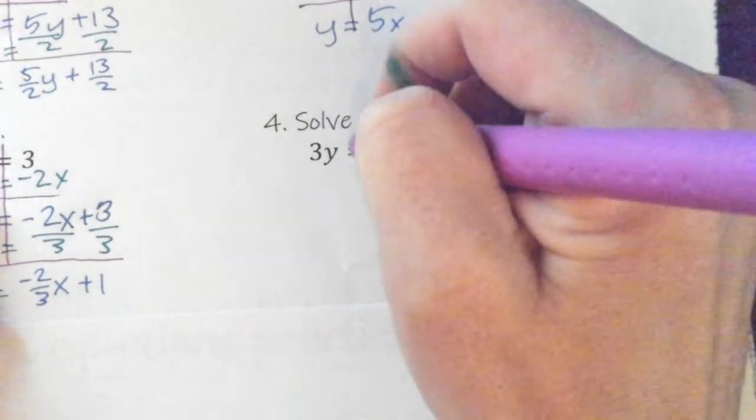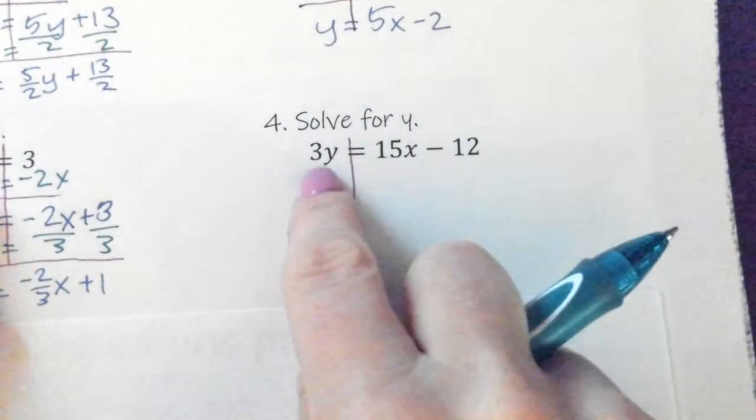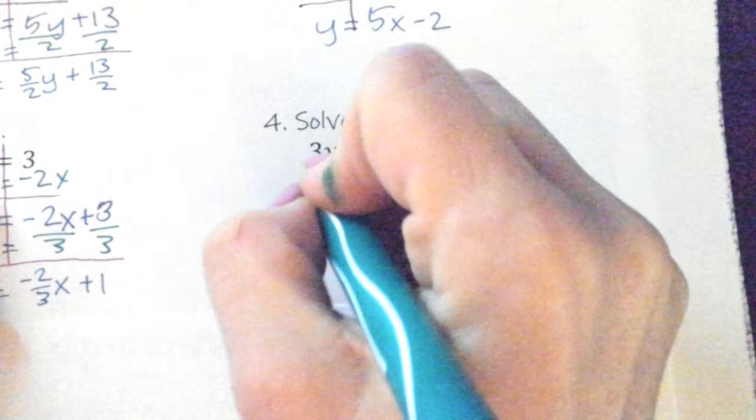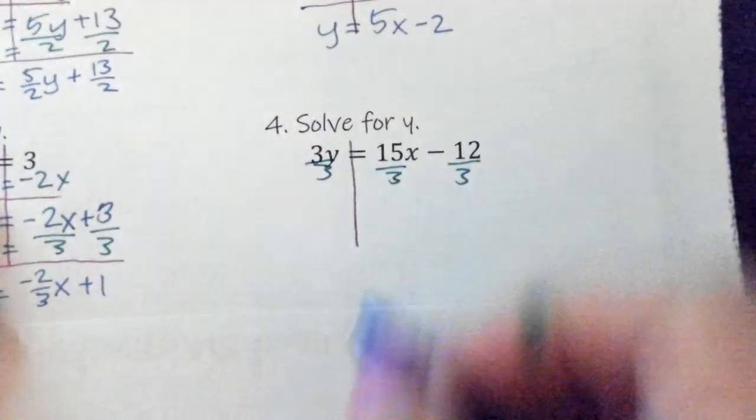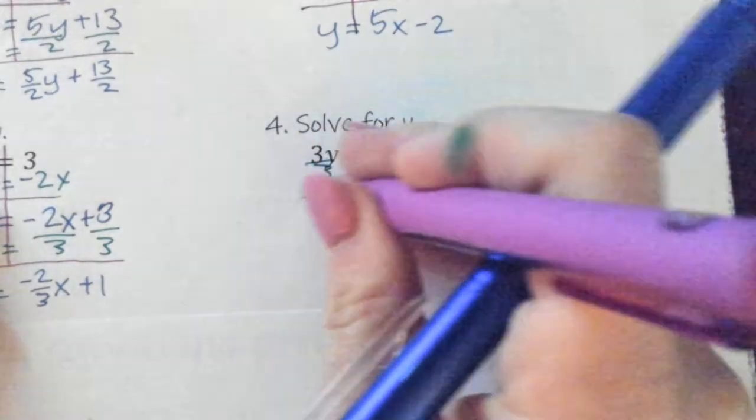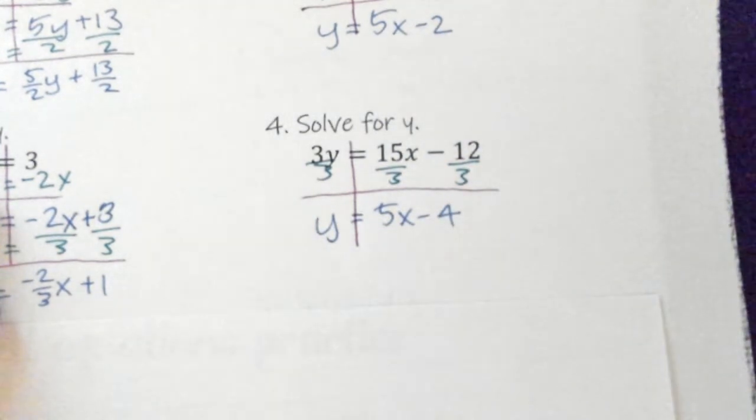One last example. Again, we are solving for y. I want to get y by itself. Right now it's being multiplied by 3, so I'm going to divide everything by 3. We are left with y equals 5x minus 4. That's it.